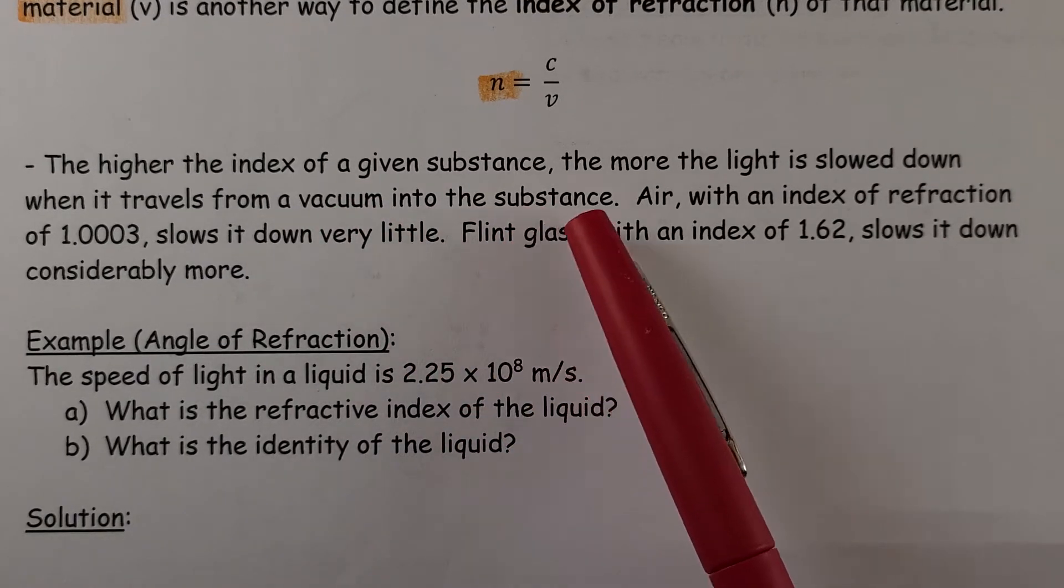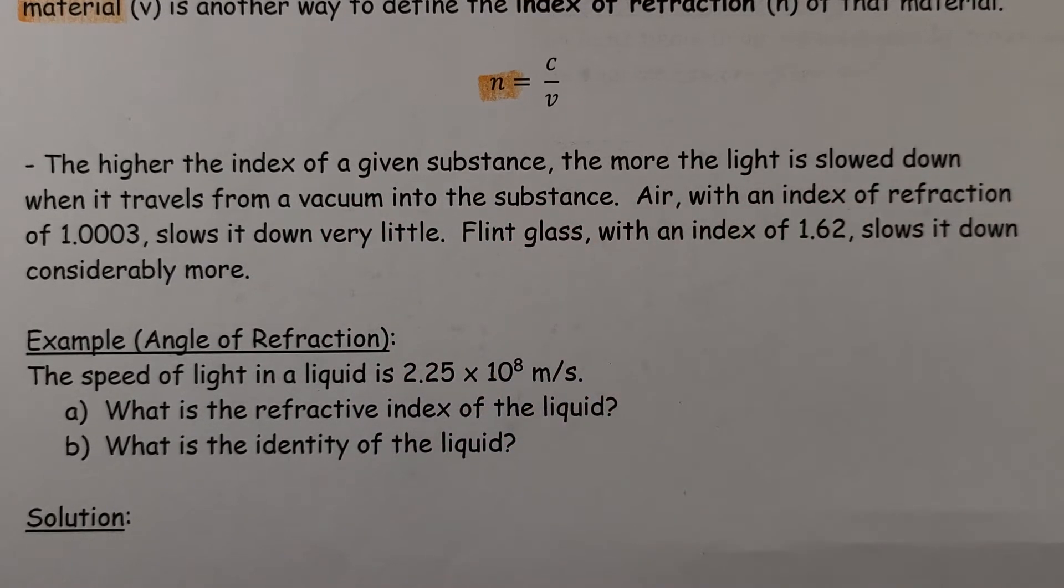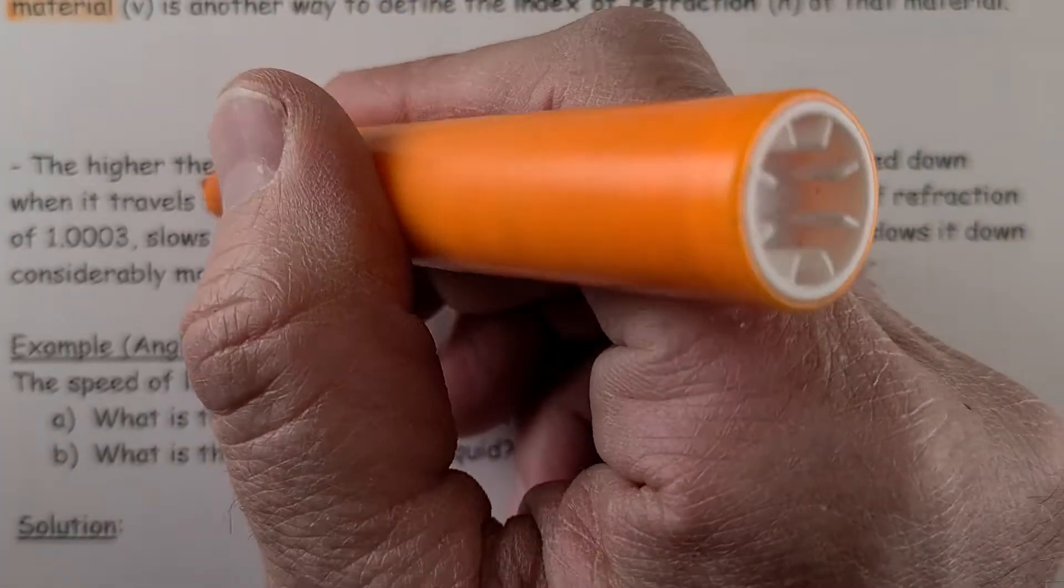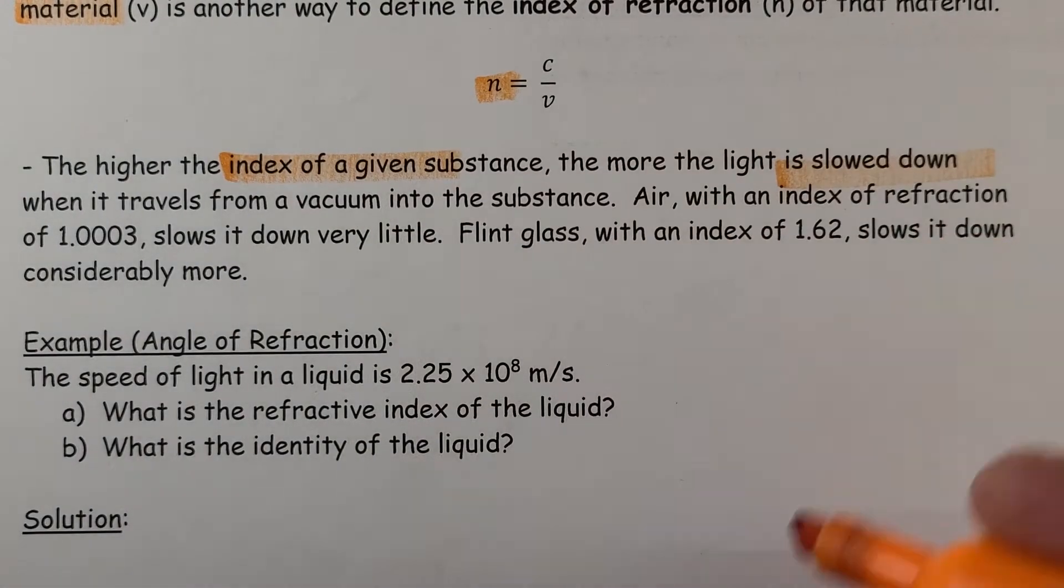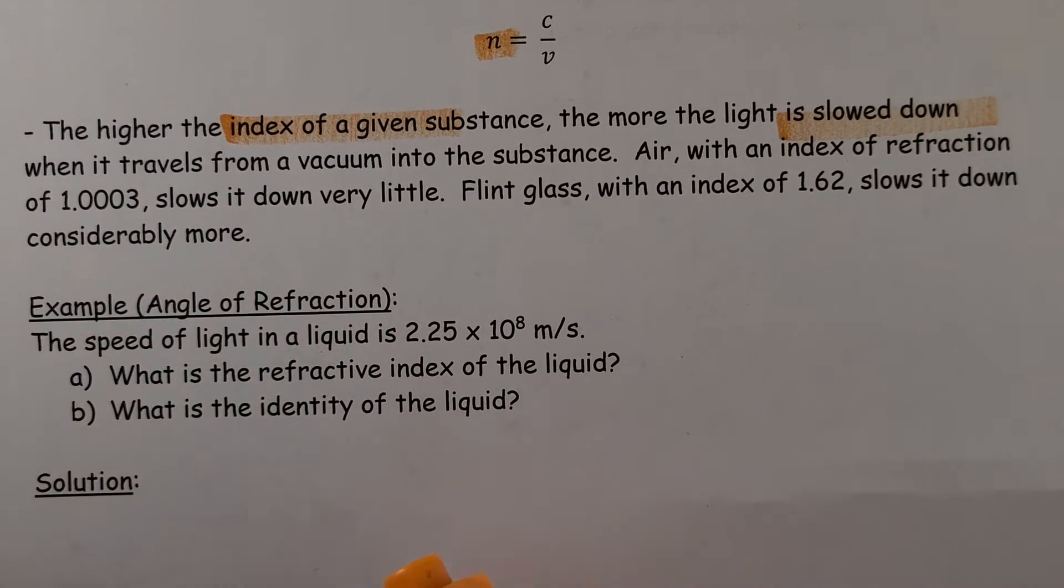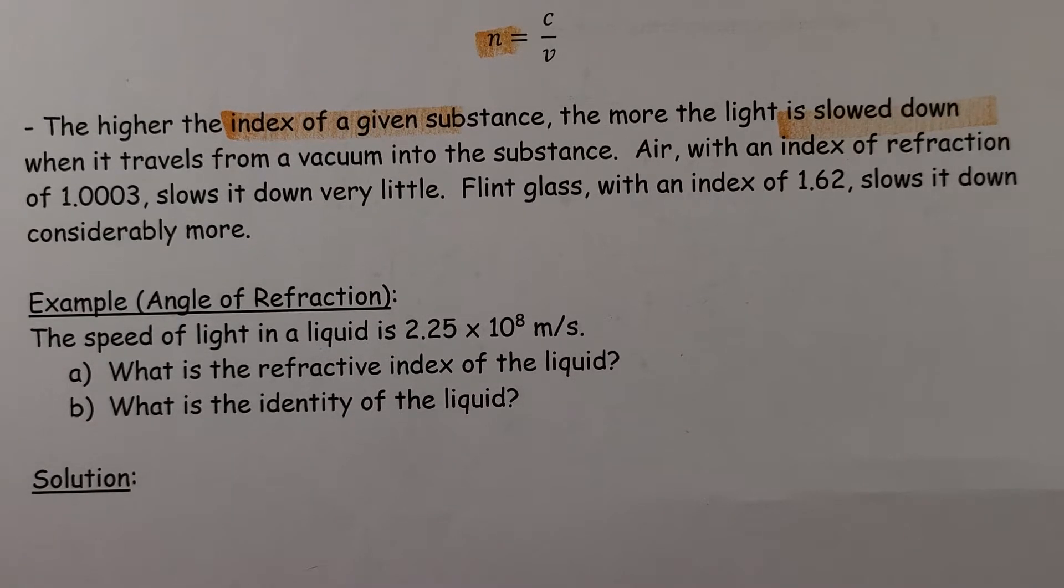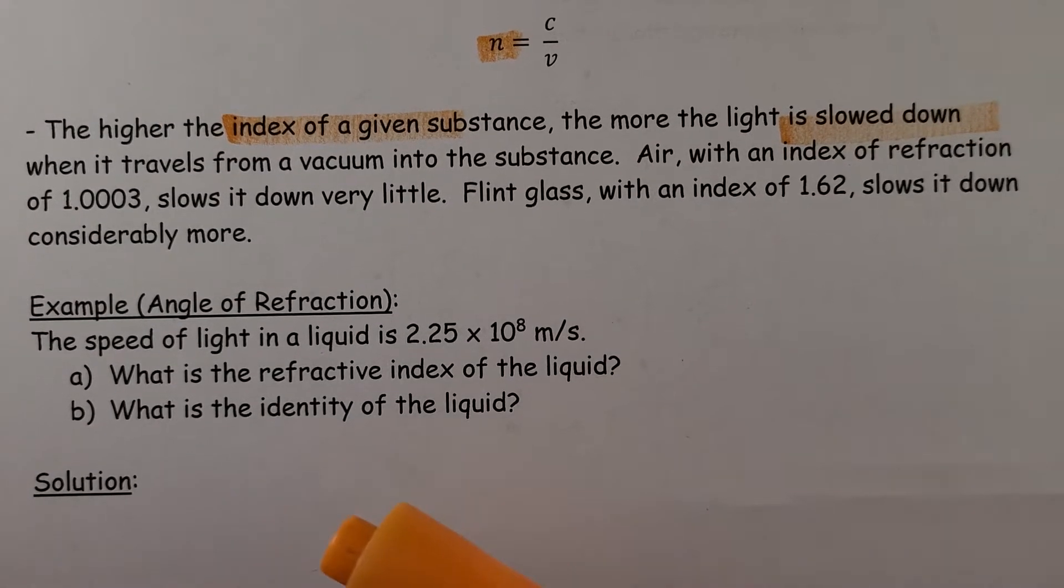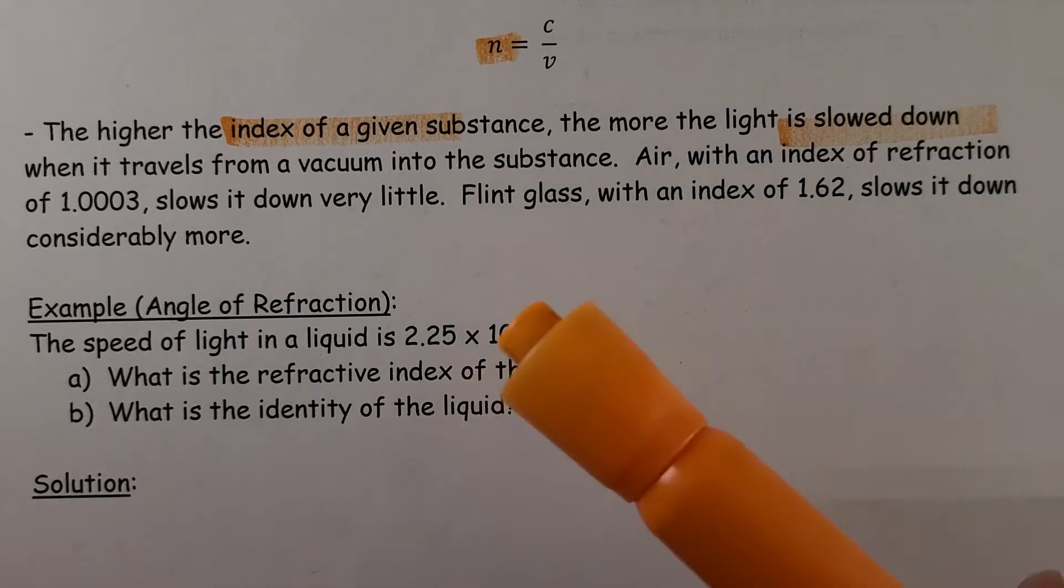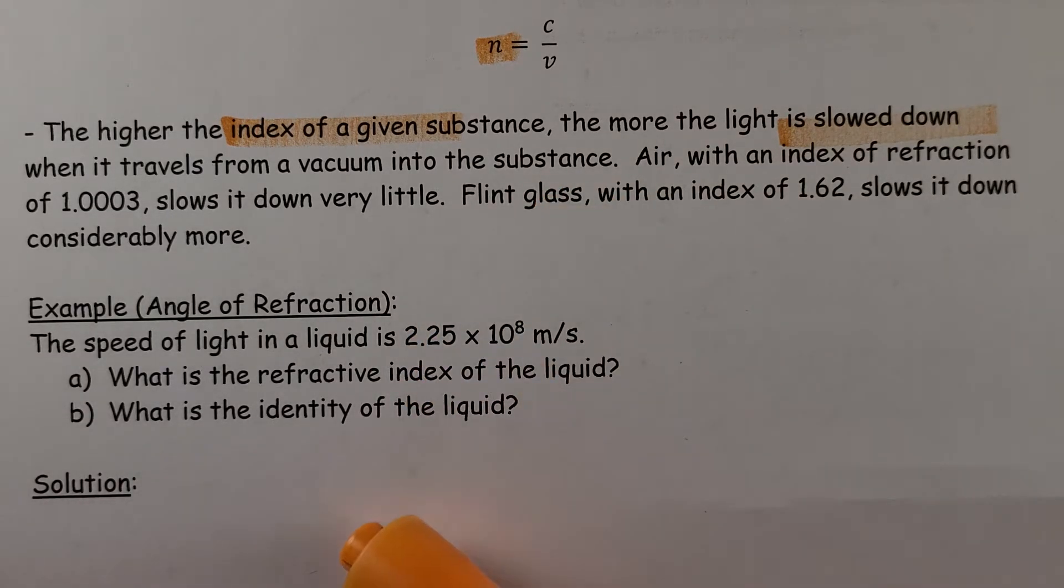The higher the index of refraction of a given substance, the more light is slowed down. So the higher that n value, the more it's slowed down. When light travels from a vacuum into the substance, for example, air with an index of refraction of 1.0003 slows down very little. So when I'm going from vacuum to air, very little change. But if I'm talking about going to crown glass or flint glass or a diamond, it slows down substantially.